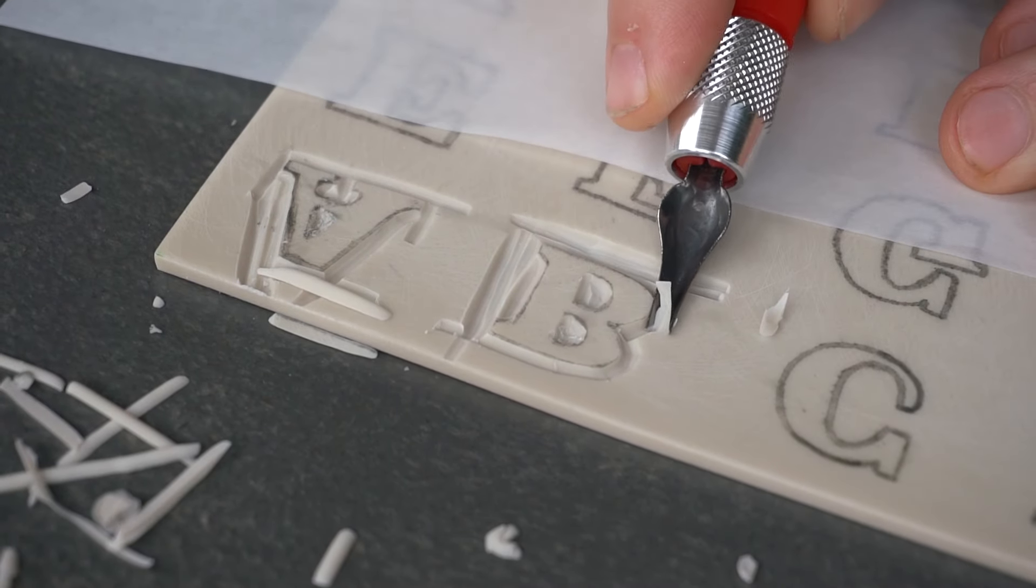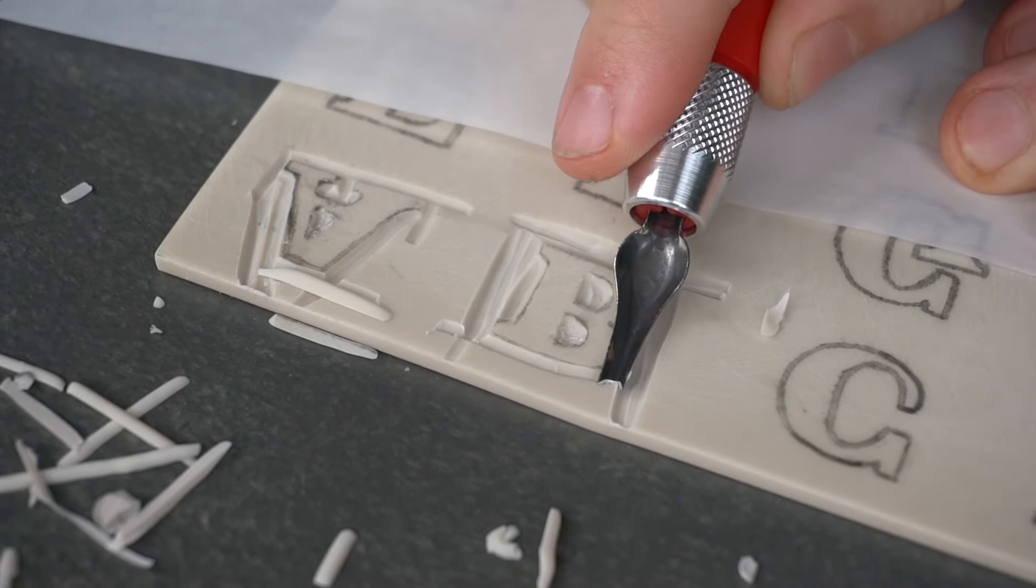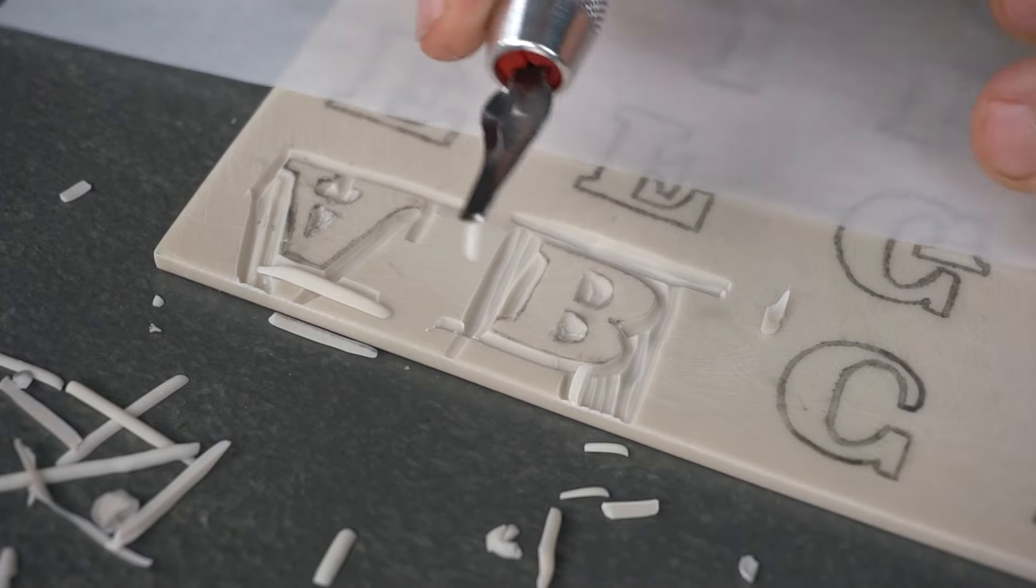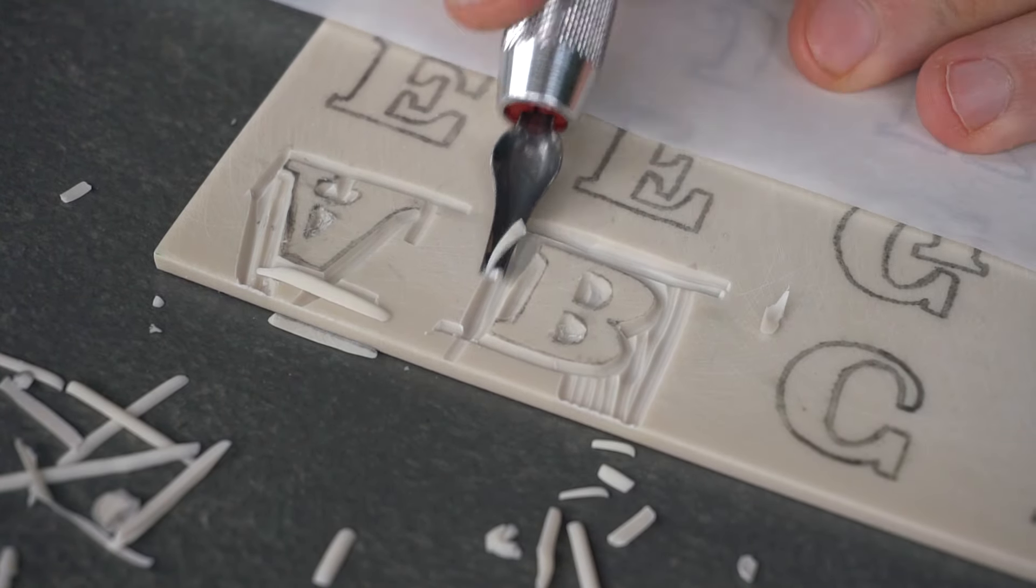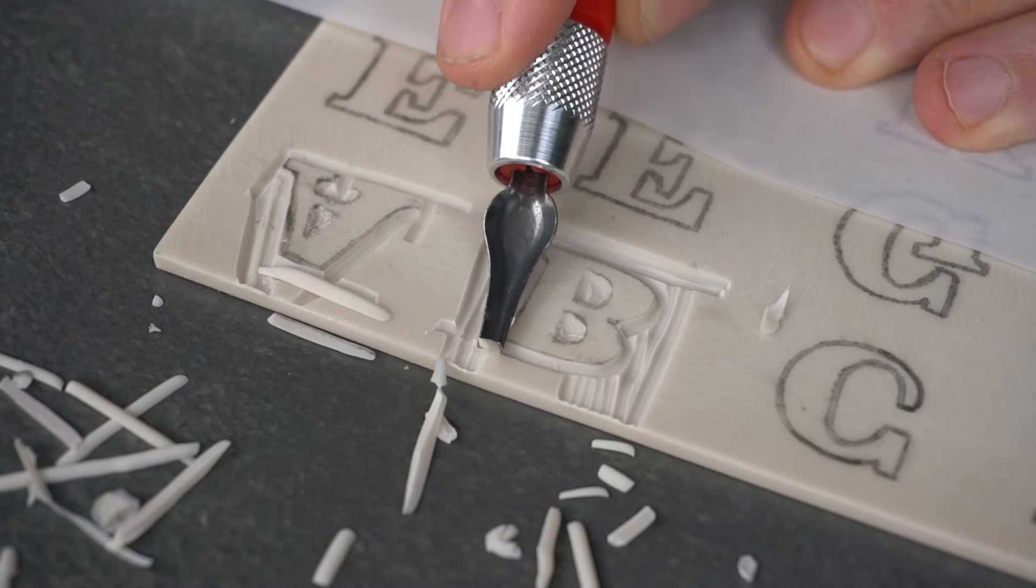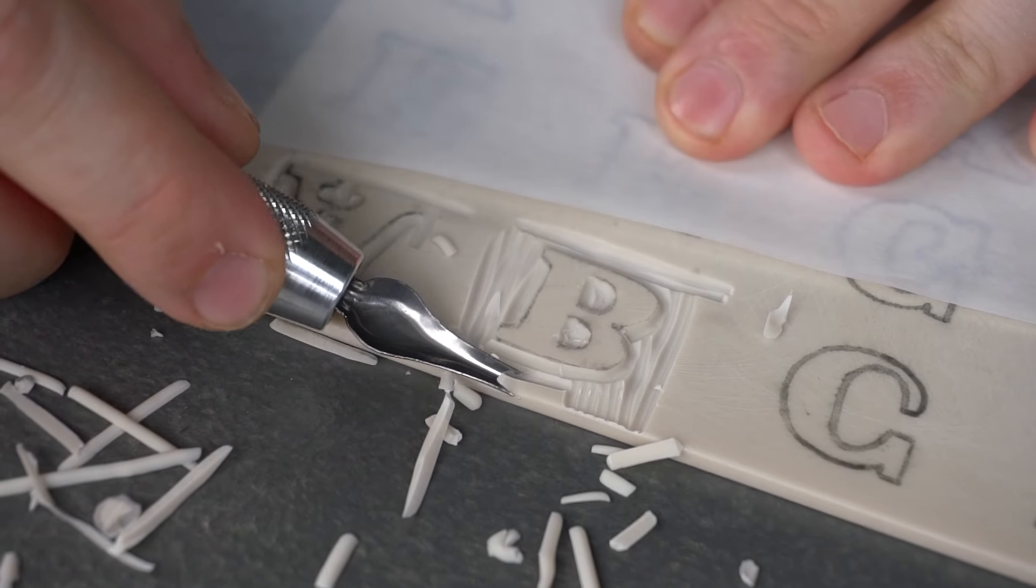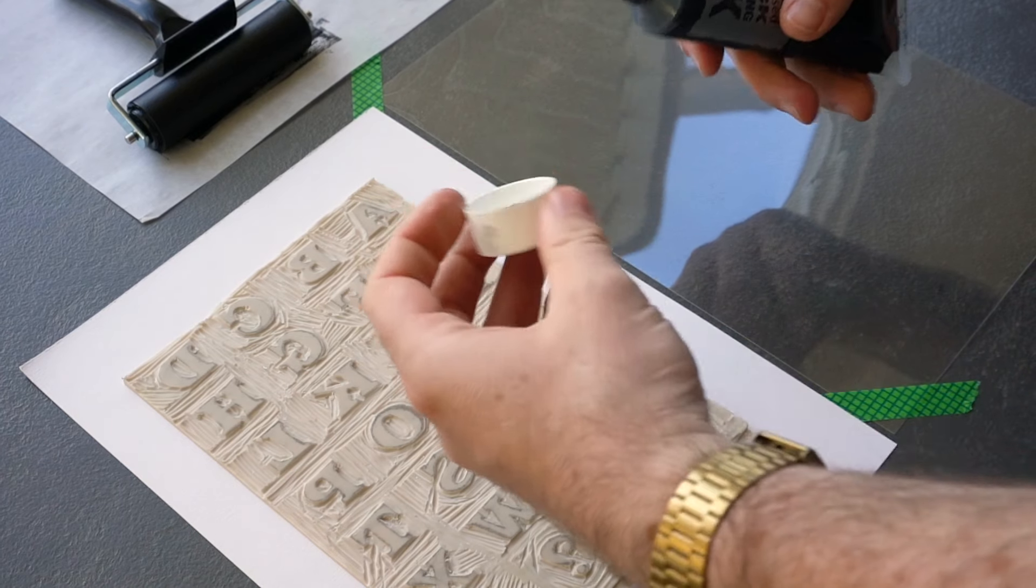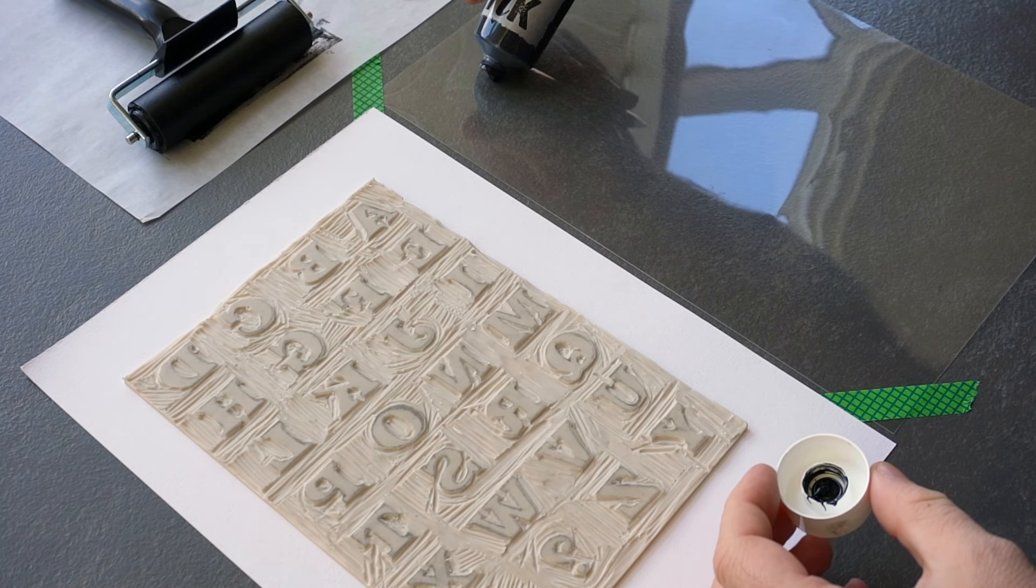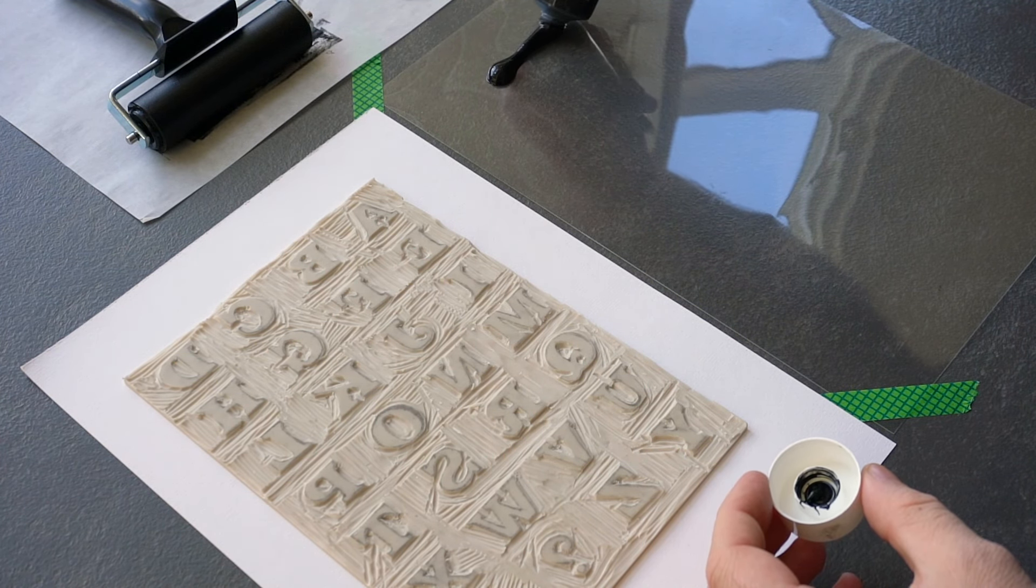When you have the outline of your letter done, what you want to do is carve out the rest of the space because the thing with lino you've got to remember is that the area which you're leaving is going to be the color. Everything else, everything you want to be white has to go. And here we carved out all of the letters, it took a little while, as you can imagine, we didn't think it was worth showing you all of that.